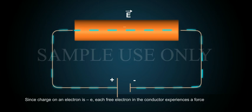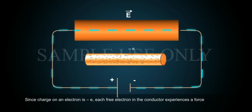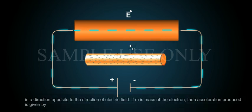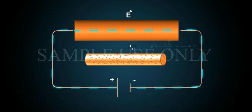Since charge on the electron is minus e, each free electron in the conductor experiences a force F bar equals to minus e capital E bar, equation 3, in a direction opposite to the direction of electric field. If M is mass of the electron, then acceleration produced is given by A bar equals to e E bar by M, equation 4.